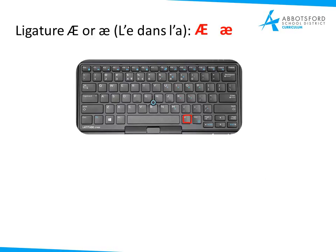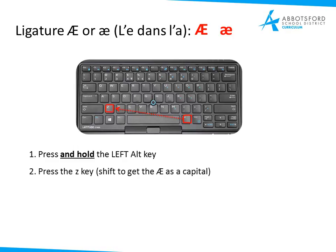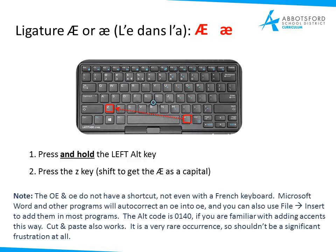For the ligature — the AE in capital or lowercase — you need to use the right Alt key just to the right of the space bar. Hold it and press the Z key. That'll give you your ligature, and if you want it capitalized, do Shift+Z. One strange thing is that even French keyboards don't have the OE combination. As far as I can tell, the only way to get that is to use an insert or alt code — the alt code is 0140. Cut and paste works as well, but since it's extremely rare it shouldn't be a big problem.